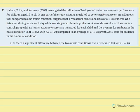Number 15: researchers investigated the influence of background noise on classroom performance for children aged 10 to 12. Calming music led to better performance on arithmetic tasks compared to a no-music condition. One class of 18 students listens to calming music while working on arithmetic problems; a second class of 18 serves as the control with no music. The music group averaged 86.4 with SS equal to 1550; the no-music group averaged 78.8 with SS equal to 1204.